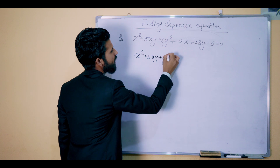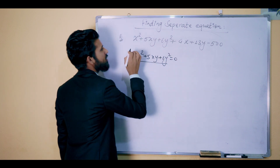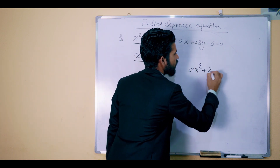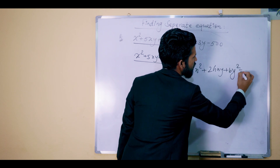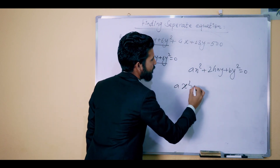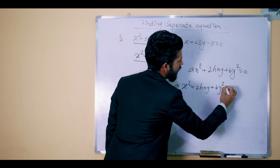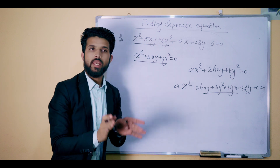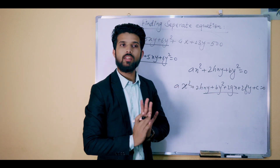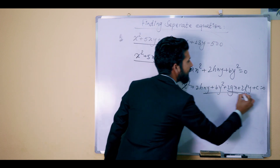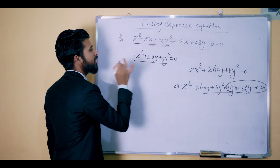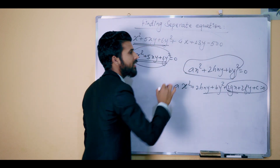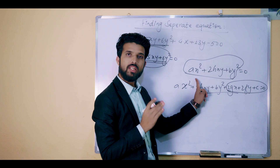x squared plus 5xy plus 6y squared is equal to 0. You can see the angle between the lines represented by these equations. The line parallel and passing through the origin — we have seen the homogeneous equation of 2nd degree, which passes through the origin.